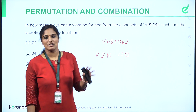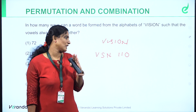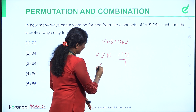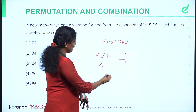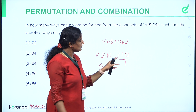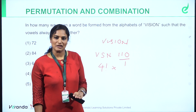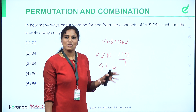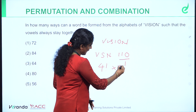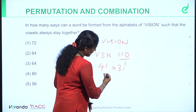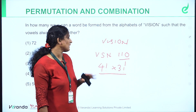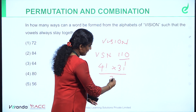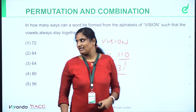The criteria is to make the vowels come together. If vowels come together, we treat them as one unit. So we have consonants plus one vowel unit — four letters. We arrange these four factors. Within the vowel group we arrange I, I, O — that is 3 factorial arrangements, divided by 2 factorial for the repeated I. The answer is 72.